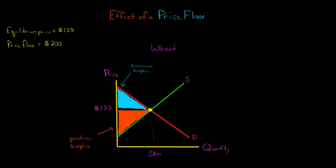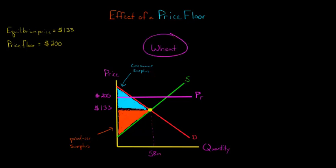Now, what is going to happen with the price floor is the government is going to come in and set a price floor of $200. I'll label that P sub F — price floor of $200. The government is saying it is illegal to sell wheat below the price of $200.